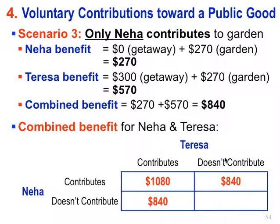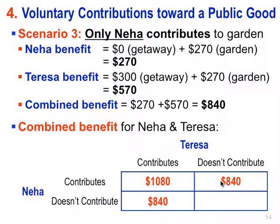It's not surprising the combined benefit is $840 in both the lower left and upper right, because in either case it's one person contributing and the other not. Since this table shows the combined benefit for Neha and Teresa, the combined benefit is the same. That said, Teresa's individual benefit exceeds Neha's in one case and vice versa in the other, but the combined benefit is identical.